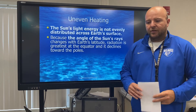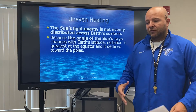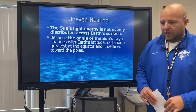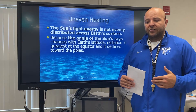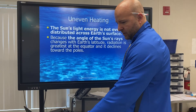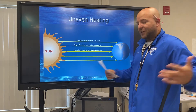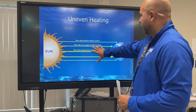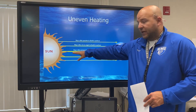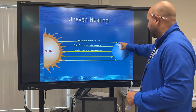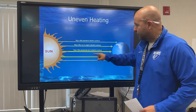Moving on to our second box: uneven heating. The Sun's light energy is not evenly distributed across Earth's surface because of the angle of the Sun's rays. With Earth's latitude, the radiation is greatest at the equator and then it declines going to the poles. The center rays hitting Earth perpendicularly produce the greatest intensity of heat. As you get to the outer parts, it's more of a glancing blow — the Sun's rays are hitting at a different angle, and there's still heat but not nearly as much.